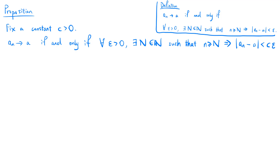We notice that this definition differs from the standard definition of a convergent sequence only in the last statement, where the absolute value of an minus a can be less than any positive multiple of epsilon instead of just epsilon. This will make the process of proving that a sequence is convergent a little bit easier. The proof of this proposition is surprisingly easy.